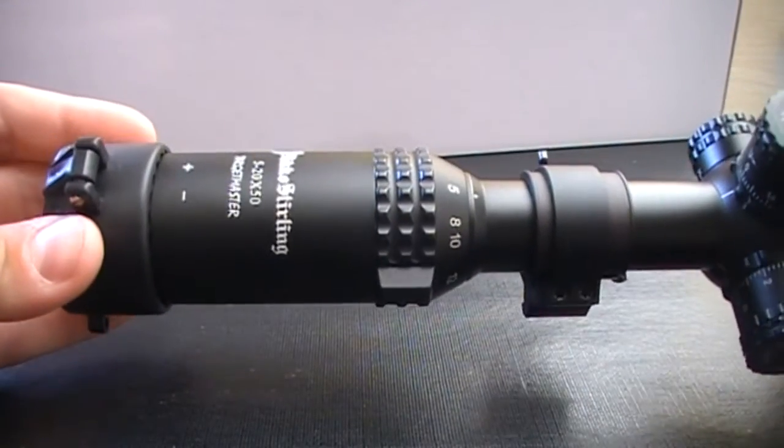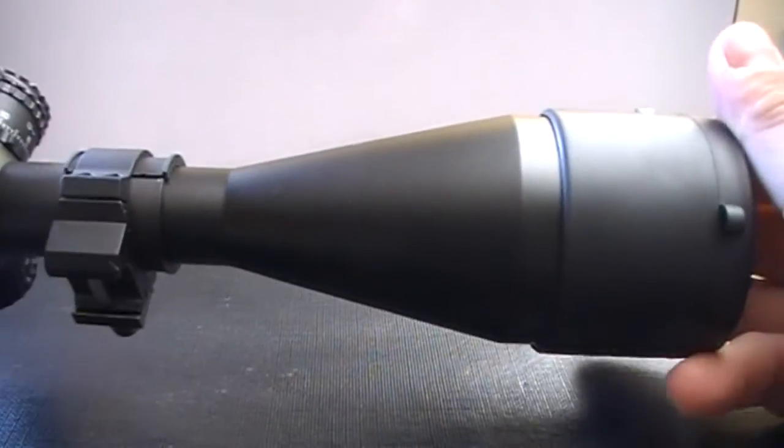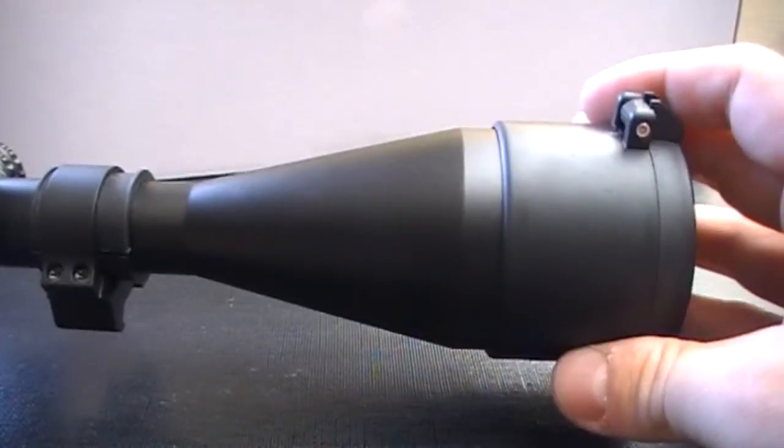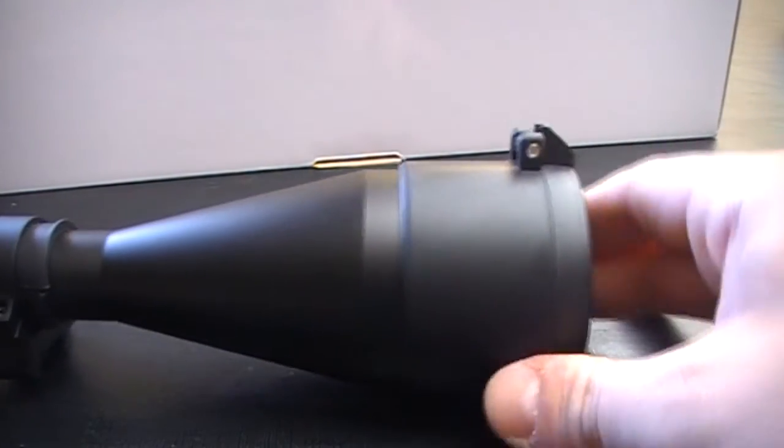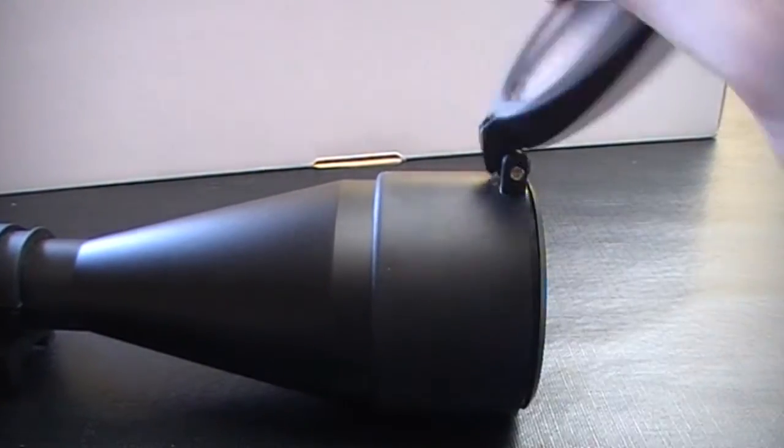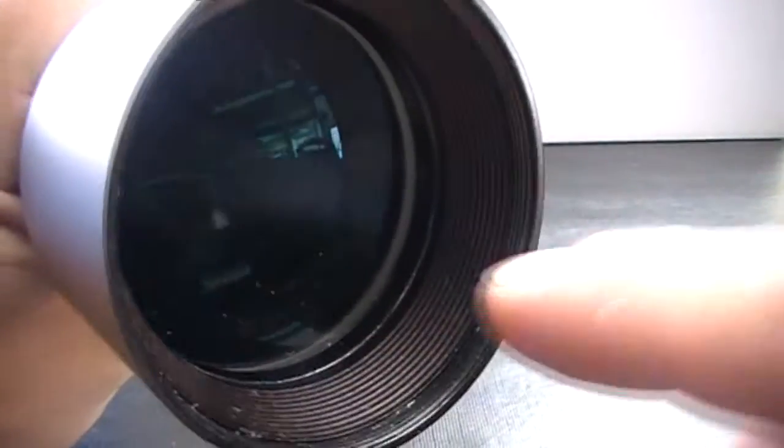It's fairly long, all Nikko Sterlings are fairly long scope-wise. It's a 50mm objective. It comes with scope caps, flip ones. They come off easily. There's no sun shade with this model, but you can put sun shades in them as well.